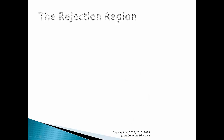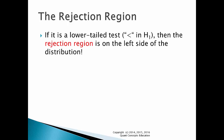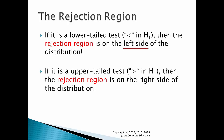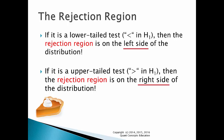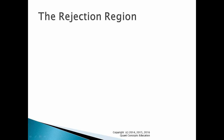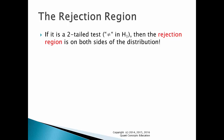Let's recap what we've just learnt. If it's a lower-tailed test — identified by a less-than sign in the alternate hypothesis — then the rejection region is on the left-hand side, or the lower side, of the distribution. If it's an upper-tailed test with a larger-than sign in the alternate hypothesis, then the rejection region is on the right side, or upper side, of the distribution. If it's a two-tailed test, identified by a not equal sign in the alternate hypothesis, then the rejection region is on both sides of the distribution — because there are two ways of rejecting the null hypothesis: if the sample mean is too much higher or too much lower than the hypothesized mean.